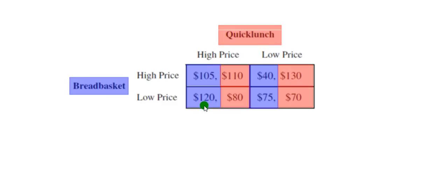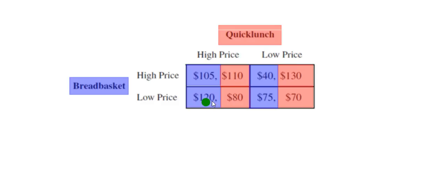They don't know what Quick Lunch is going to do, so they also have to consider what to do if Quick Lunch goes low. If Quick Lunch goes low, Bread Basket can either go high and make 40, or go low and make 75. So once again, even when Quick Lunch goes low, Bread Basket is better off going low. It doesn't matter whether Quick Lunch goes high or low — 120 is better than 105 and 75 is better than 40 — so Bread Basket has a dominant strategy to go low.